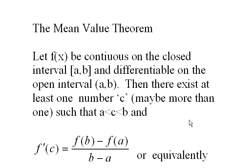Let f(x) be continuous on the closed interval [a,b] and differentiable on the open interval (a,b). Then there exists at least one number c, maybe more than one, such that c will be between a and b, and f'(c) will equal f(b) - f(a) over b - a.